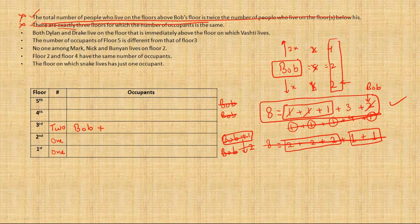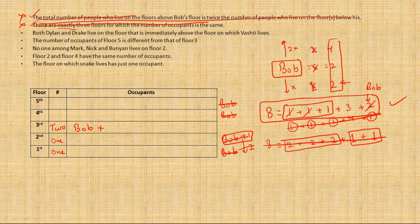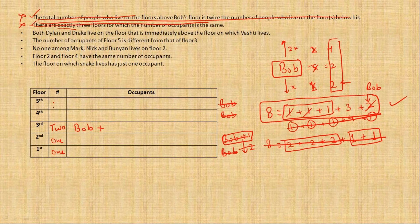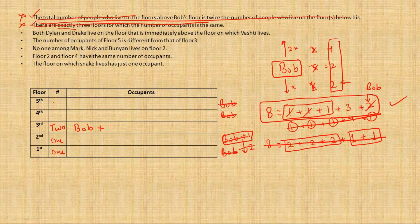Now 3rd says both Dylan and Drake live on the floor that is immediately above the floor on which Vashti lives. Now Dylan and Drake, there are 2 people who are living on the same floor. Now that cannot be Bob's floor because on Bob's floor there is space left only for 1 person. That means Dylan and Drake are the people who live on the floor on which there are 3 people living, and 3 people are now above Bob's floor. So either it could be 3 here on the 5th floor and 1 on the 4th floor. And it could also be that Vashti is living along with Bob because they don't tell us that Vashti lives alone or with somebody. So let's leave this idea here. We'll come back again.